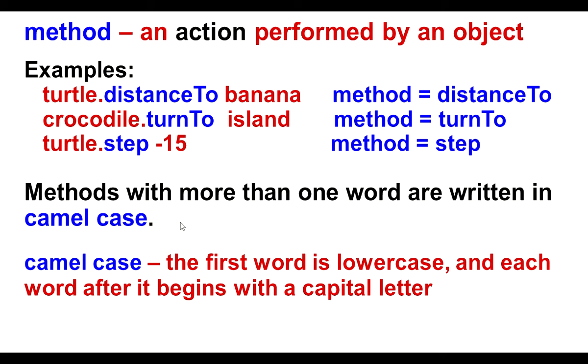If a method has more than one word in it, it's written in camel case. Camel case begins with all lowercase in the first word, and each word after it begins with a capital letter. These two methods have two words in them, and notice how the T in to is capitalized in both of these methods. This is camel case.